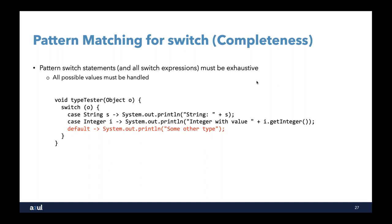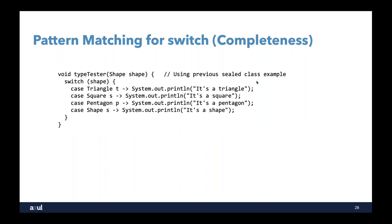We don't always have to include a default. Going back to our sealed class example, sealed class means we know exactly what type hierarchy is declared — shape has only three subclasses: triangle, square, and pentagon. If I define my switch with a case for triangle, a case for square, a case for pentagon, and a case for shape, that covers all possible types that could be a shape. The compiler will be quite happy with that — we now have completeness without needing a default.